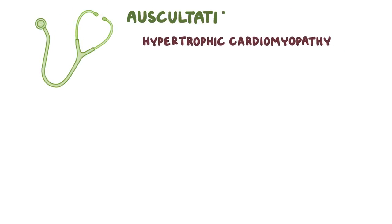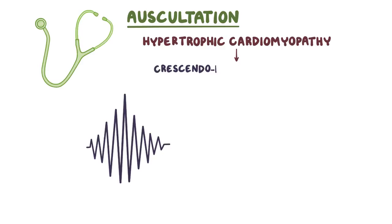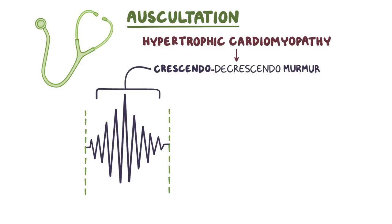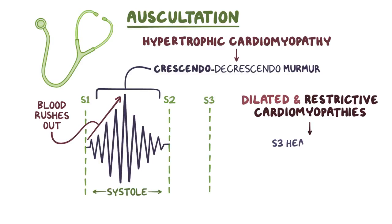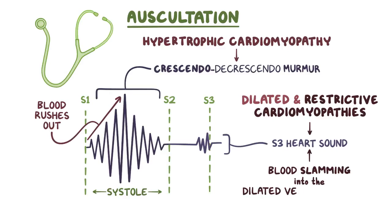On auscultation, hypertrophic cardiomyopathy causes a crescendo-decrescendo murmur between S1 and S2, so during systole, where it gets louder as blood first rushes out and then softer. On the other hand, dilated and restrictive cardiomyopathies cause an S3 heart sound on auscultation, which is the result of blood rushing and slamming into the dilated ventricular wall during diastole.